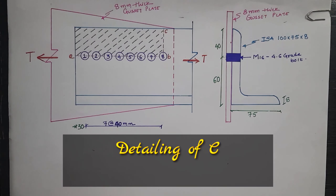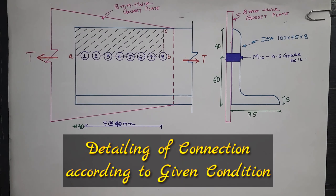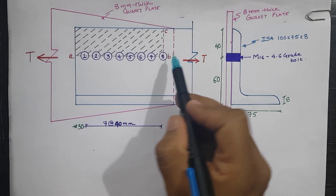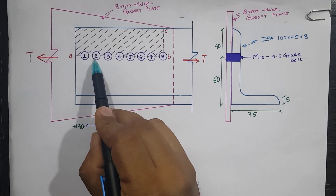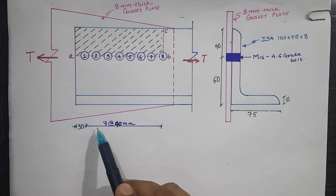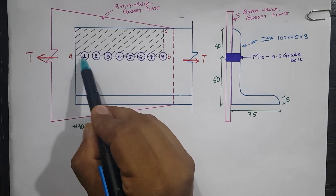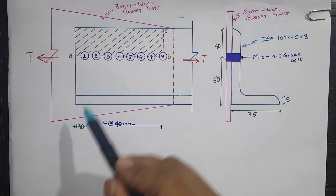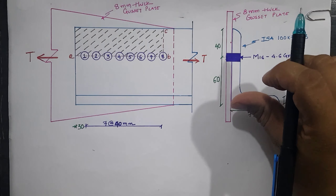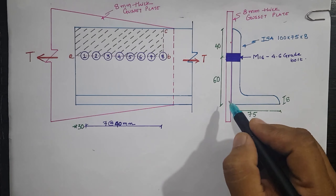This shows the detailing of 8 bolts provided with ISA 100×75×8 according to the design data. We provide 8 bolts in a single row. The distance between two bolts is the pitch — with 8 bolts there are 7 pitch spacings, so 7 × 40 mm. The end distance from bolt 1 to the edge plate is 30 mm. The bolt is placed from the bottom of the angle section at 60% of the height of the connected leg.